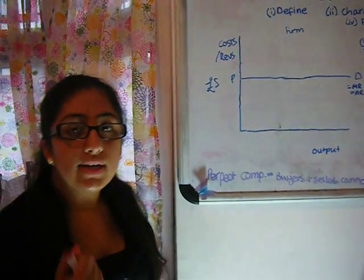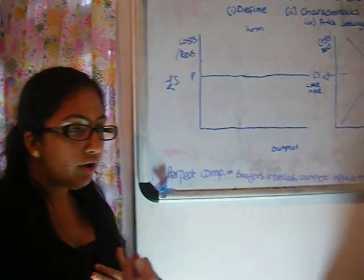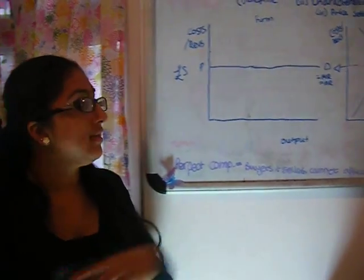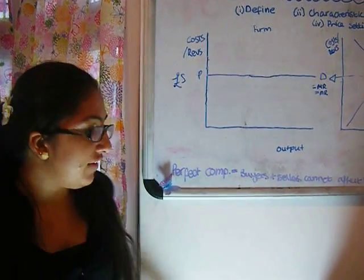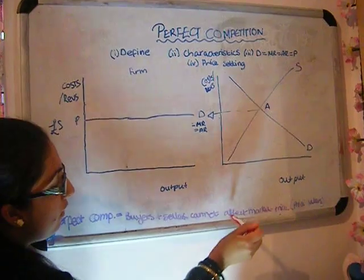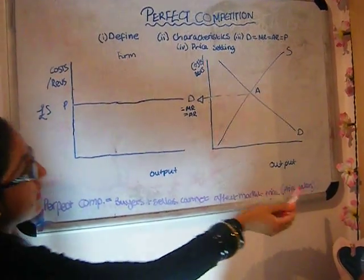And we call these firms price takers because when they come into the market, they have to take the price of the market. They are not allowed to put their own price as we'll see because they will be adversely affected. So as we can see here, buyers and sellers cannot affect market price. They are price takers.